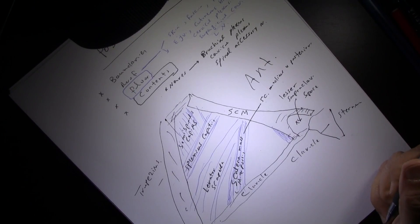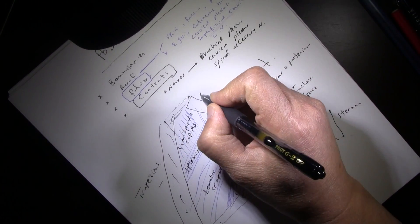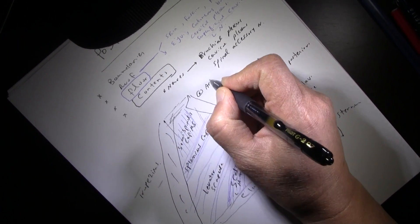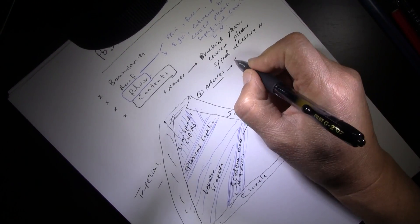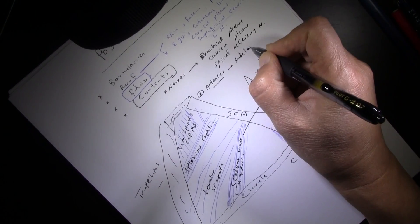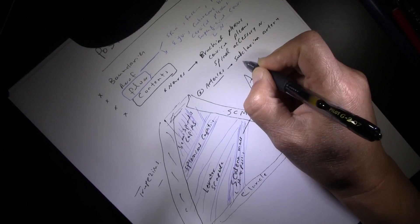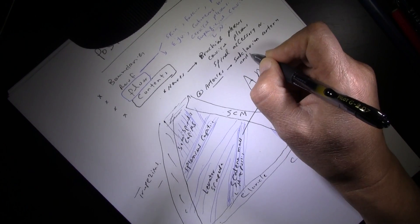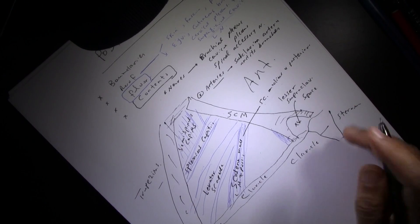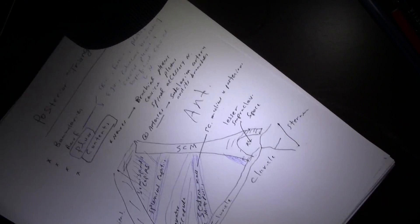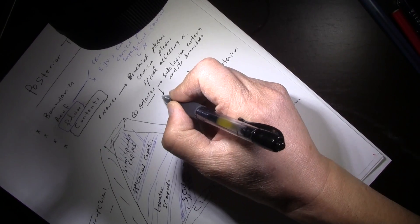The arteries in the triangle include the subclavian artery and some of its branches — not all branches, but some. You also have the occipital artery inside the triangle.